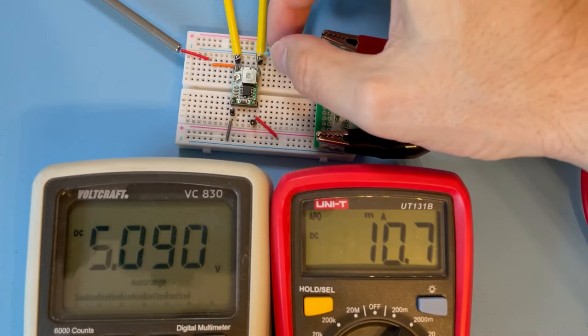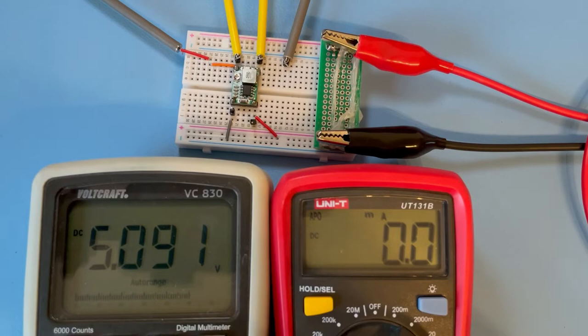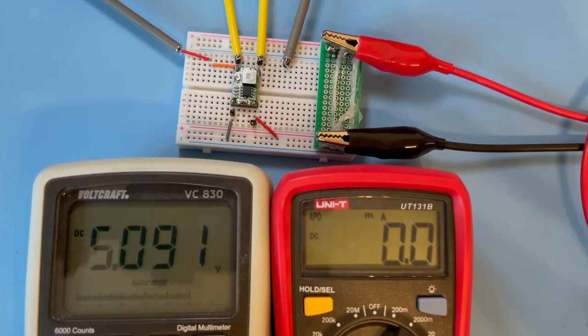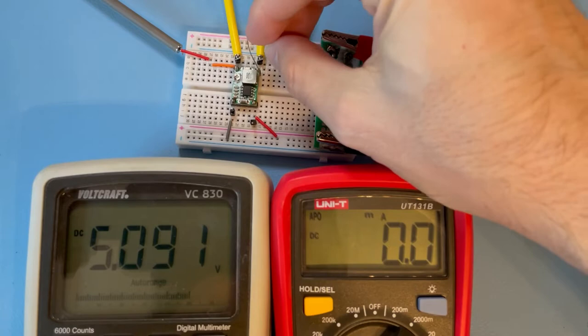Now we go down to 220 ohms, which is again smaller than the half, so we end up somewhere around 20-25 milliampere with this one. Let's see, yeah 22.8 and we're very very stable at the output again, 5.09.